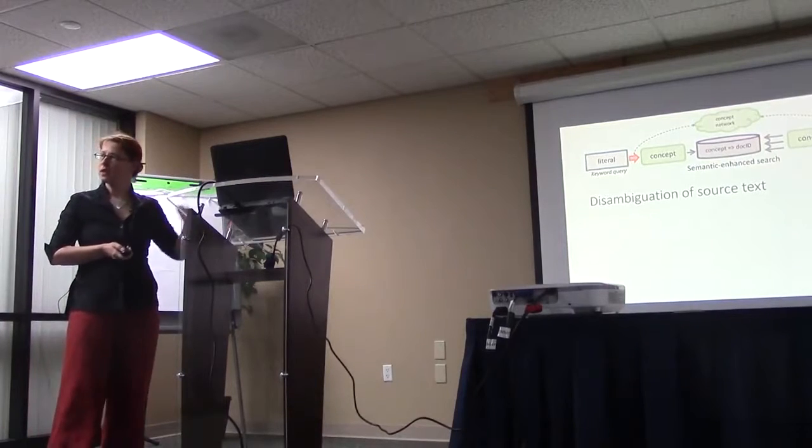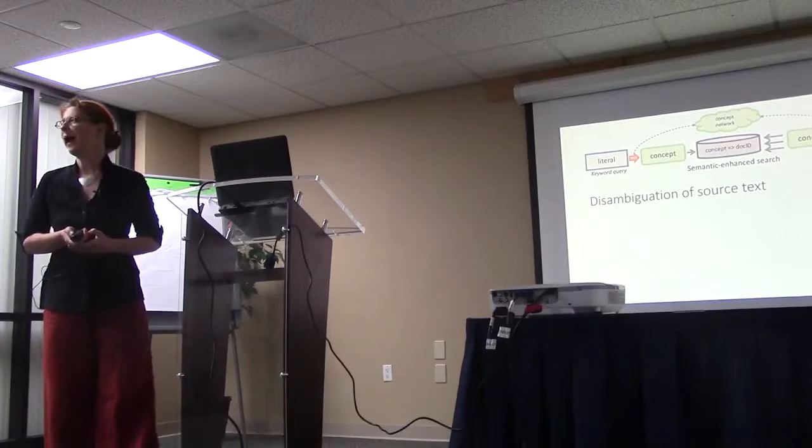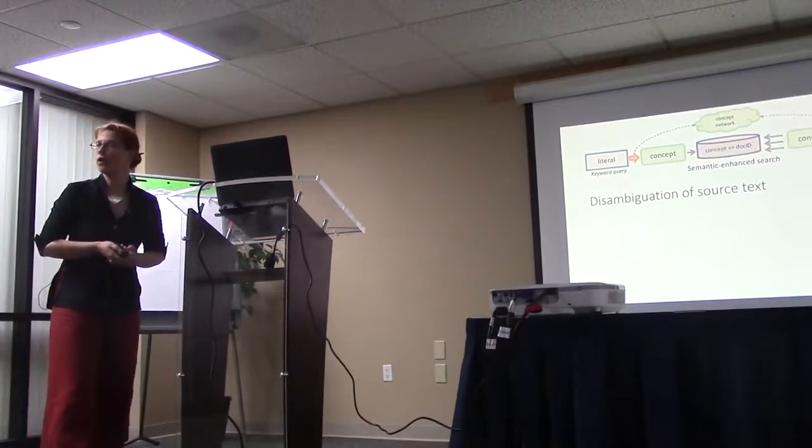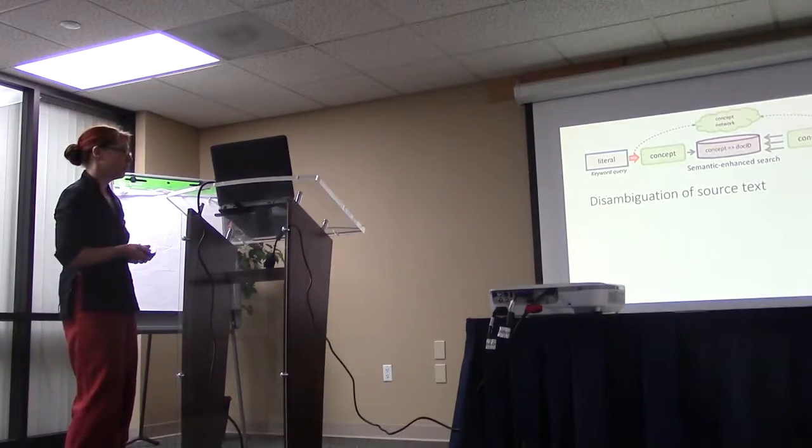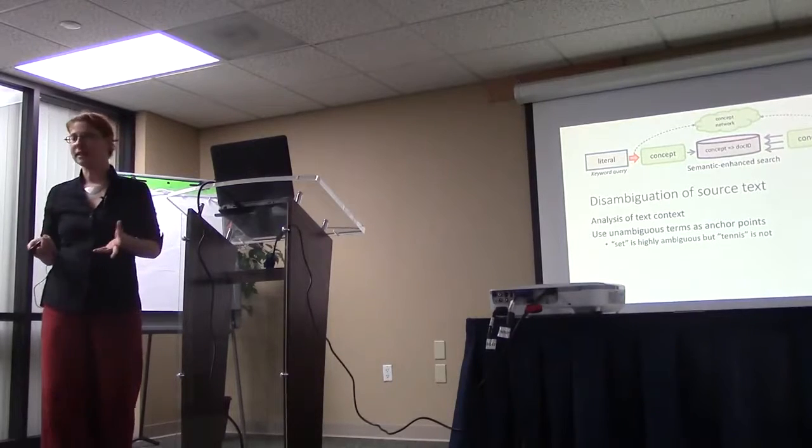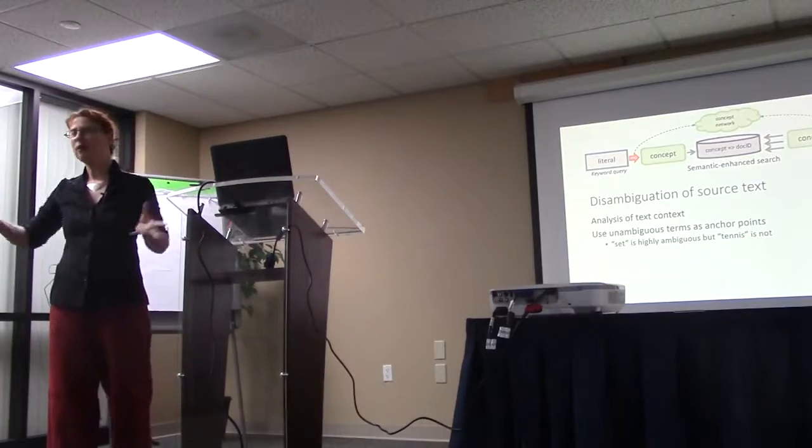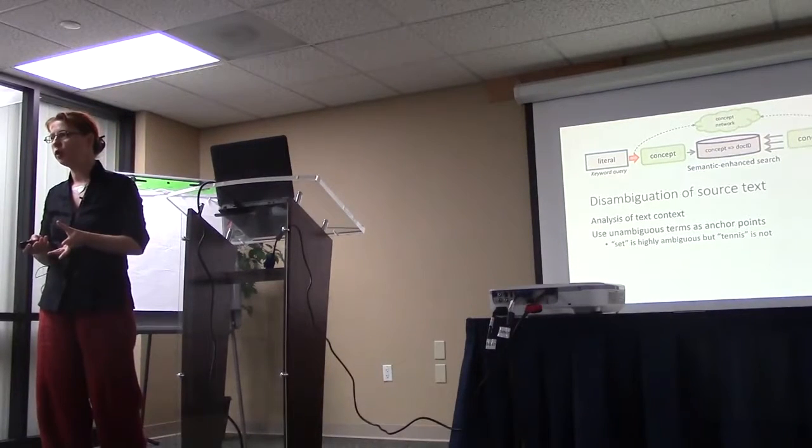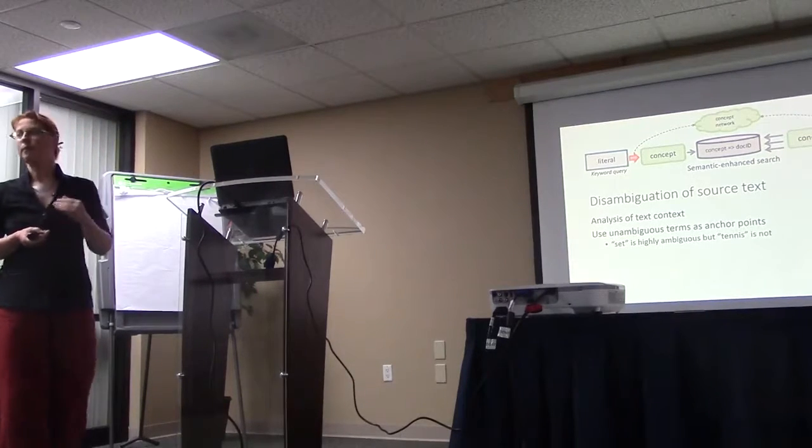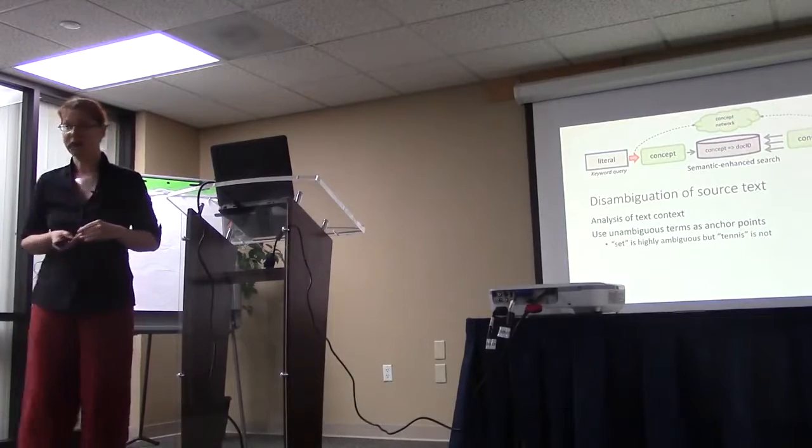So we said we had the user side, and then we have the side of the documents. Well, for the side of the documents, we can't go back and say to the author, what did you mean? So we really have to work with the document. That is about all we have. So what we do there is that we use the whole text as context. We look at a word and we use the words around it as context for this word. And we basically look for terms that are unambiguous or as little ambiguous as possible.